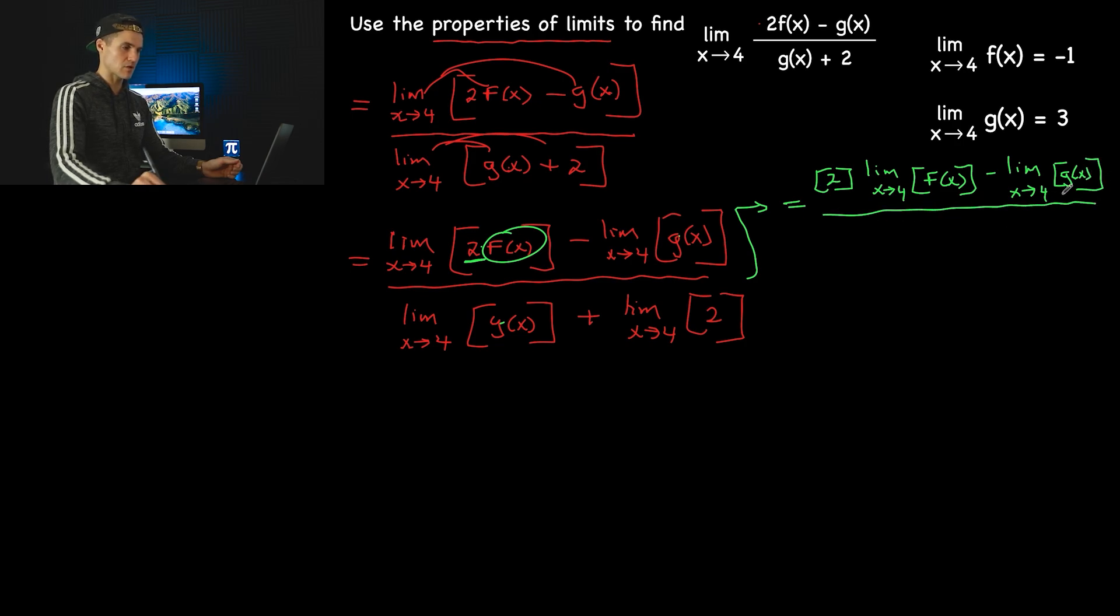Everything else stays the same. There's nothing else to do, as I mentioned. So the limit as x approaches 4 of g(x), plus the limit as x approaches 4 of 2, like that.